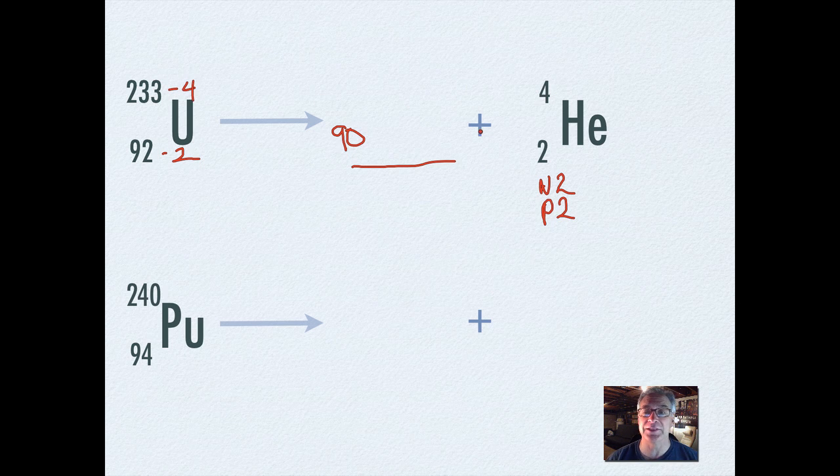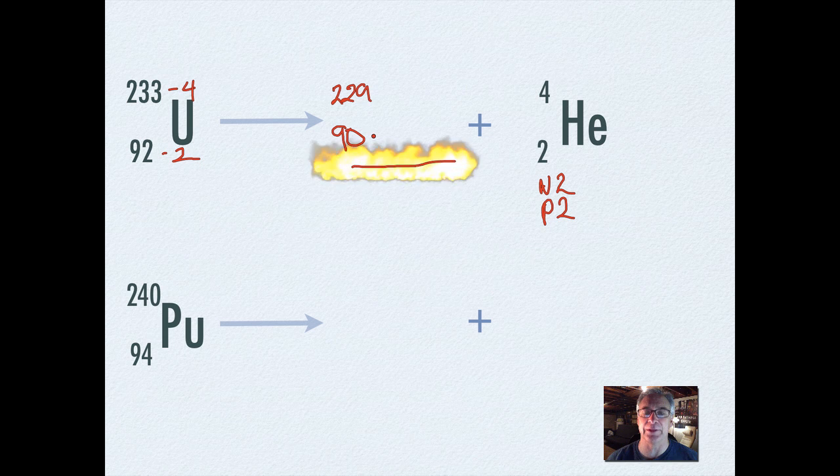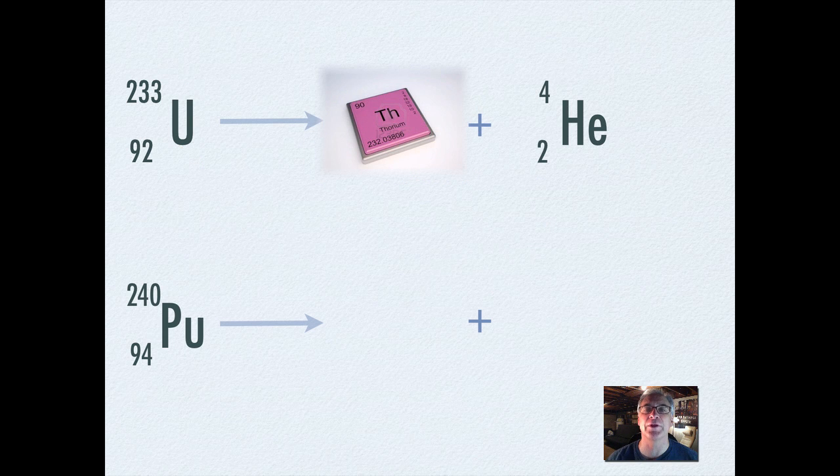And then we also know that we're going to subtract four from here because that's what's leaving. It started with this, now it's left. So that's going to be 229. Well how do I know what that is? I look it up on the periodic table. Near the bottom of the table you'll see some of these isotopes, and the isotope that we're going to be looking at after we look at the periodic table is thorium.